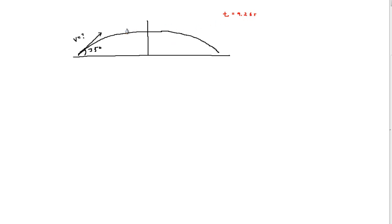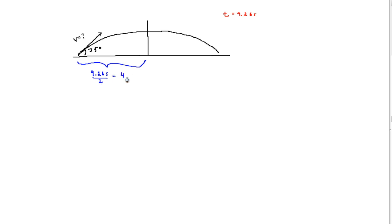In order to determine the amount of time traveled by the projectile for the first half, all we have to do is take 9.26 seconds — the total time traveled — divided by 2, which gives us a value of 4.63 seconds.